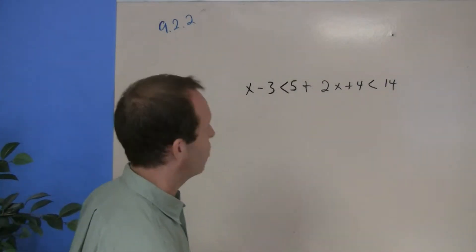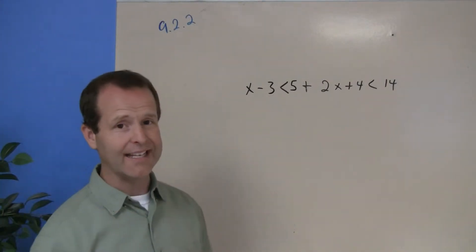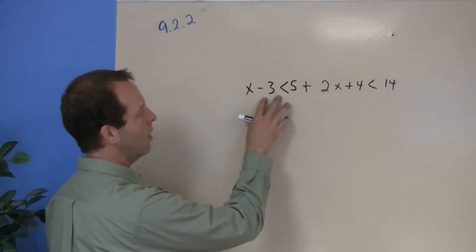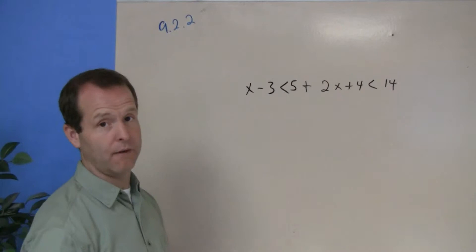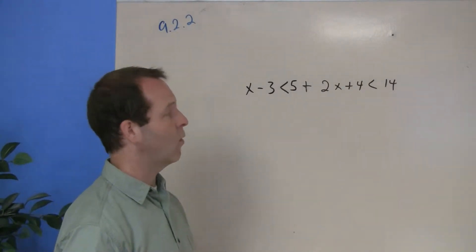I want to solve a compound inequality that has an 'and' in it, which means that I have one inequality and a second inequality: x minus 3 is less than 5 and 2x plus 4 is less than 14.